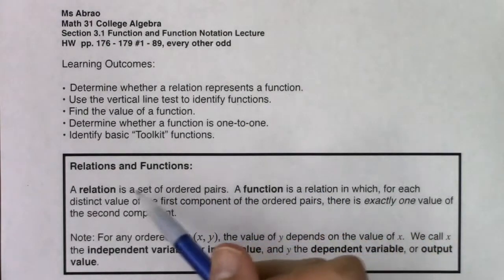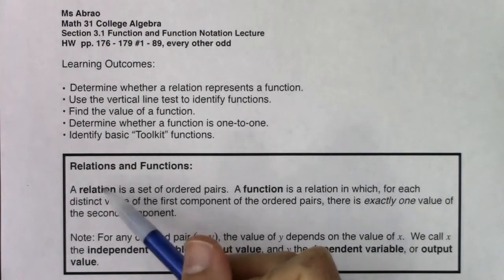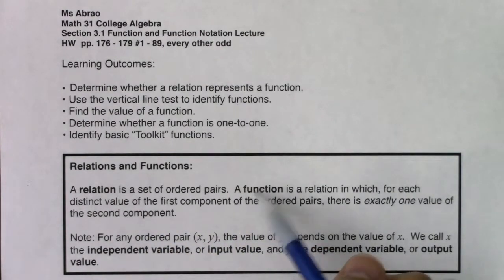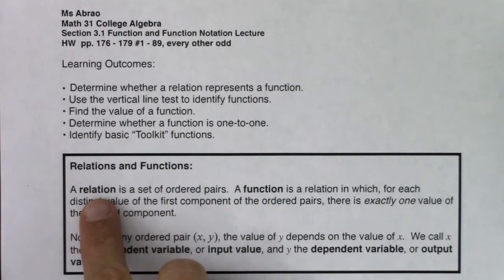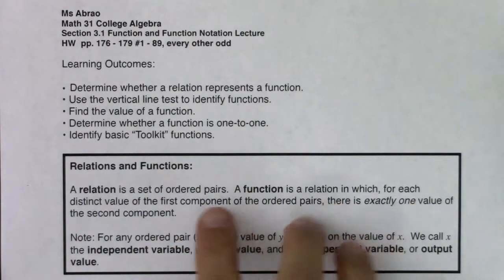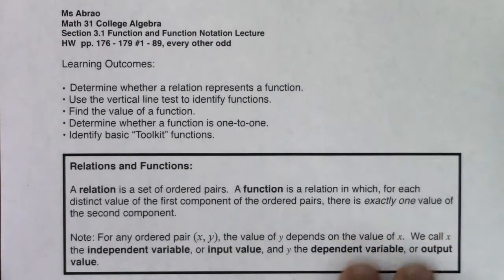So how this works is every function is automatically a relation, but not every relation is a function. Any set of ordered pairs, I don't care what they look like, we'll call them a relation. But if with that set of ordered pairs, every X value has exactly one Y value, then we'll call it a function.